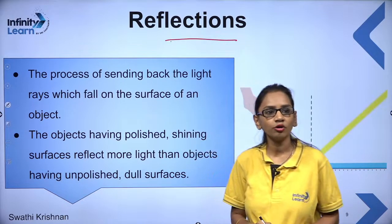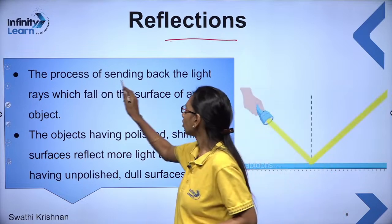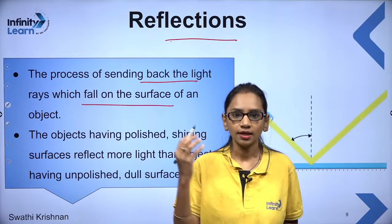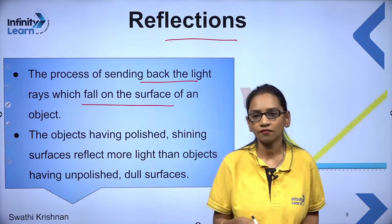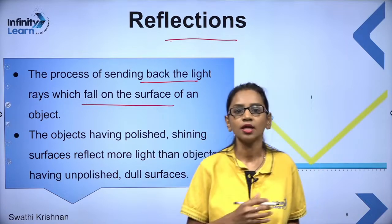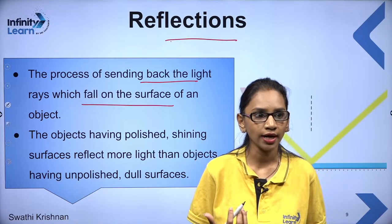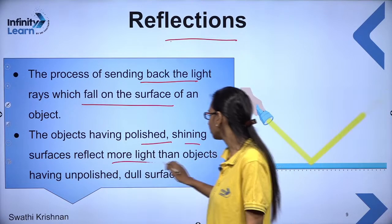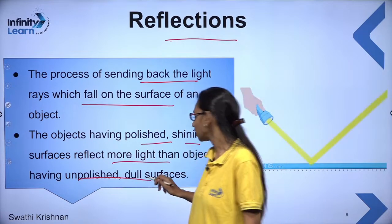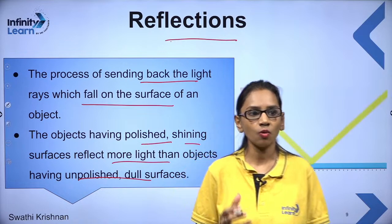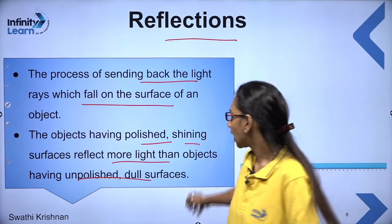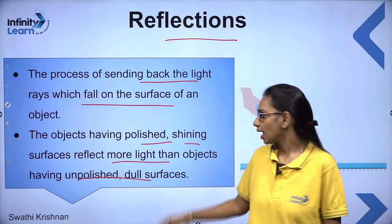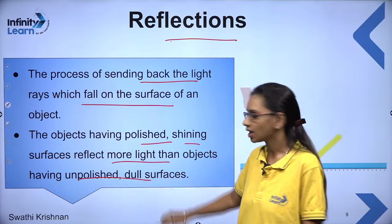Let us talk about what we understand by reflection. The process of sending back the light ray which falls on the surface of an object — any light ray hitting your surface and going back — that is basically reflection. Objects having polished, shining surfaces reflect more light than objects having unpolished, dull surfaces. That is why we generally use mirrors, which are polished and shiny surfaces.